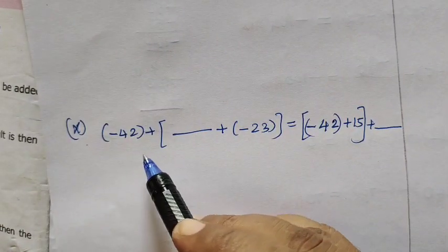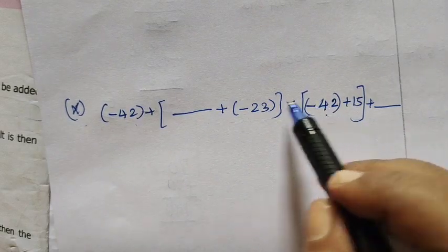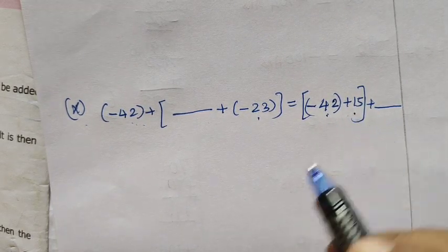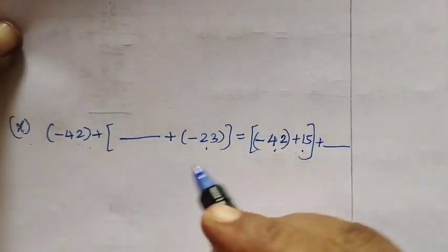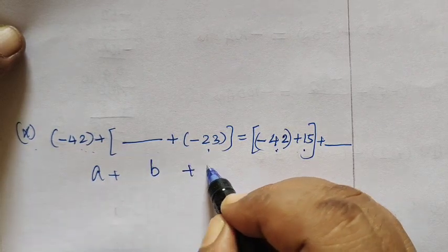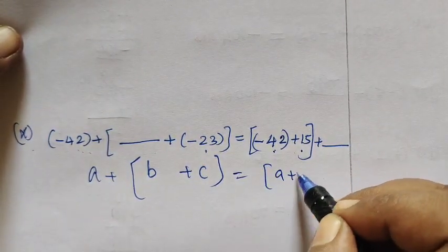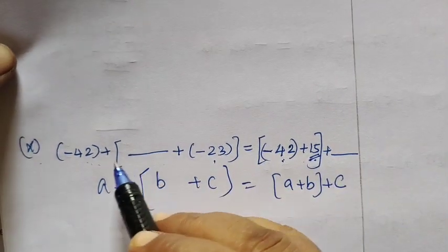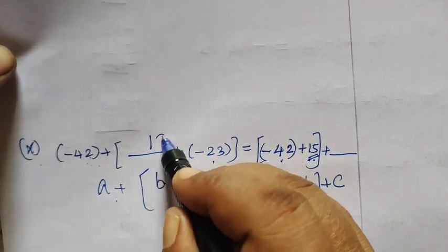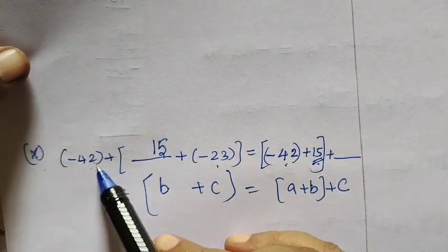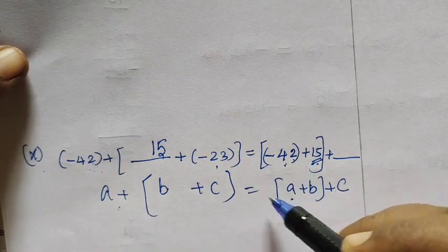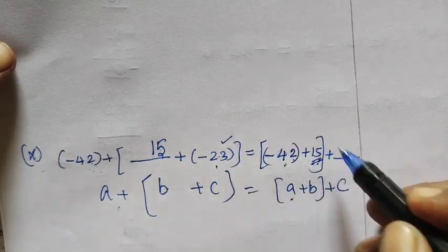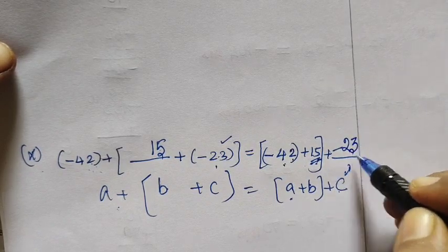Then the next one, 10th question. Minus 42 plus 2. Here is one number, here is one number. Now what do you need to add? You are getting the third one. So even we are using the associative property. A plus B plus C equal to A plus B plus C. Then what is B? 15. Then if it is A, then what is B? 15. This is C. So what is C? Minus 23. So this is the answer.